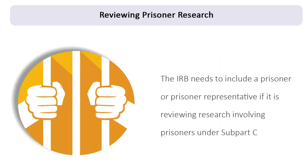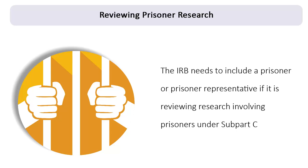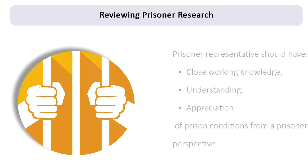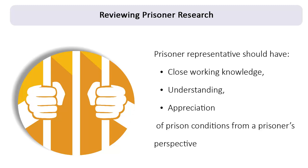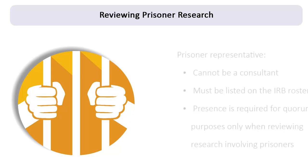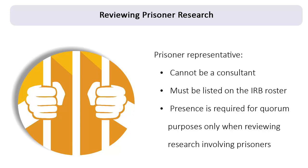The IRB needs to include a prisoner or prisoner representative if it is reviewing research involving prisoners under Subpart C. OHRP recommends that a prisoner representative have a close working knowledge, understanding, and appreciation of prison conditions from a prisoner's perspective. This person cannot be a consultant and must be listed on the IRB roster as a primary member or alternate.